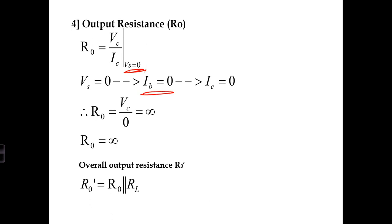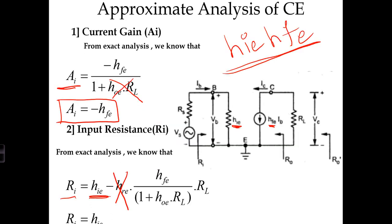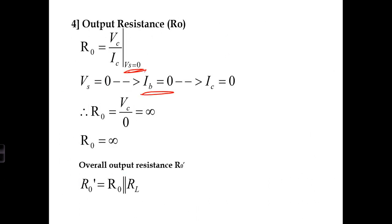When VS is zero, IB will be zero. The base current IB flows due to VS only. If VS is zero, IB is zero. If IB is zero, then HFE times IB is also zero. HFE times IB is nothing but IC. So IC also becomes zero. If IC becomes zero, R0, which is VC divided by zero, becomes infinity. In approximate analysis, R0 equals infinity.